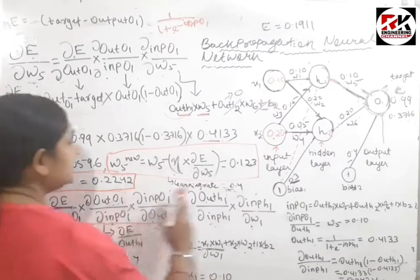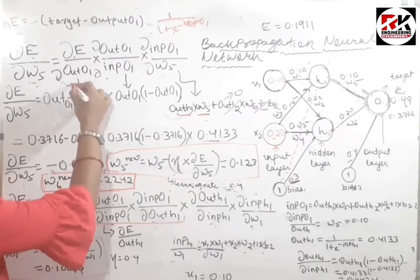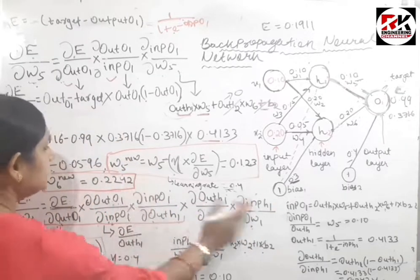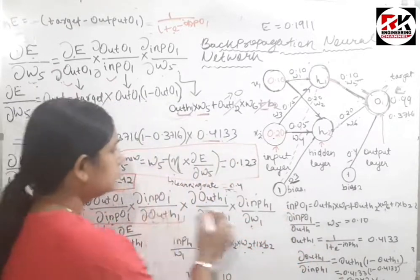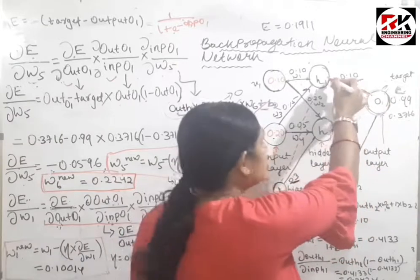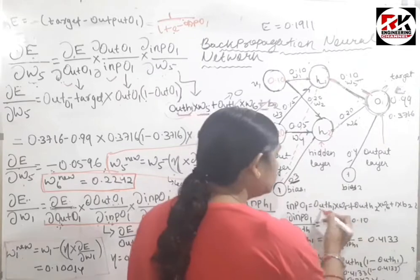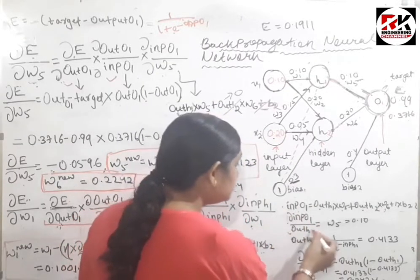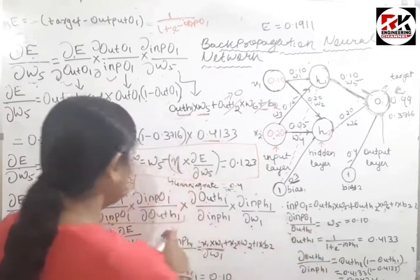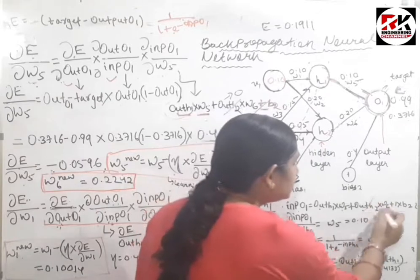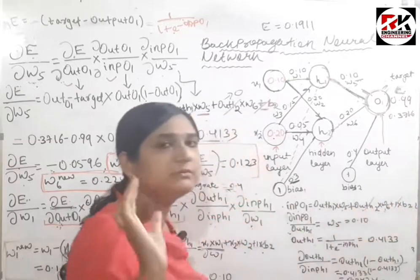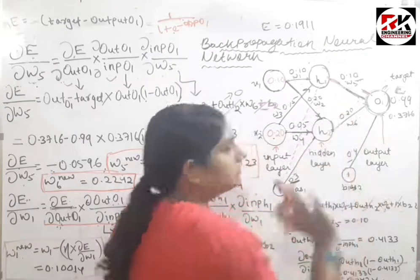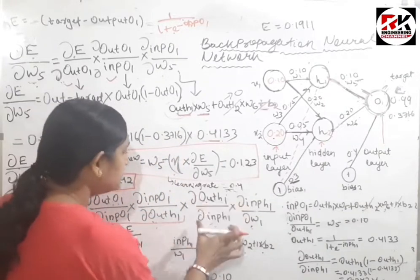The first two terms — ∂Error/∂out(o1) and ∂out(o1)/∂in(o1) — are already calculated above. For ∂in(o1)/∂out(h1): the input of o1 is out(h1)×w5 + out(h2)×w6 + bias2. Differentiating with respect to out(h1), all other terms cancel, leaving just w5, which equals 0.10.